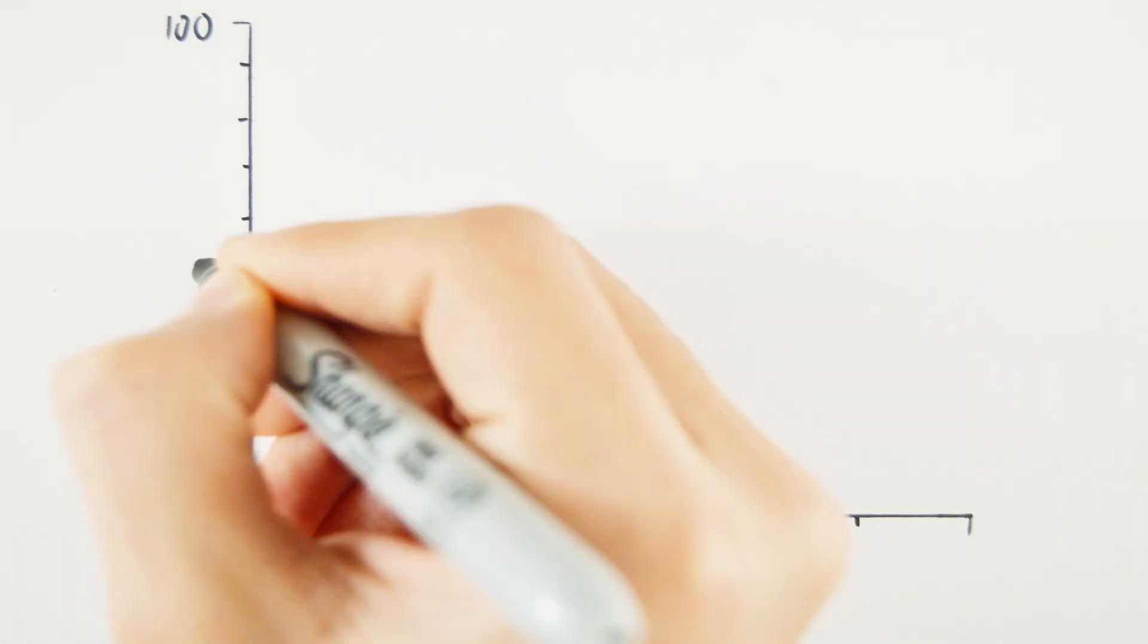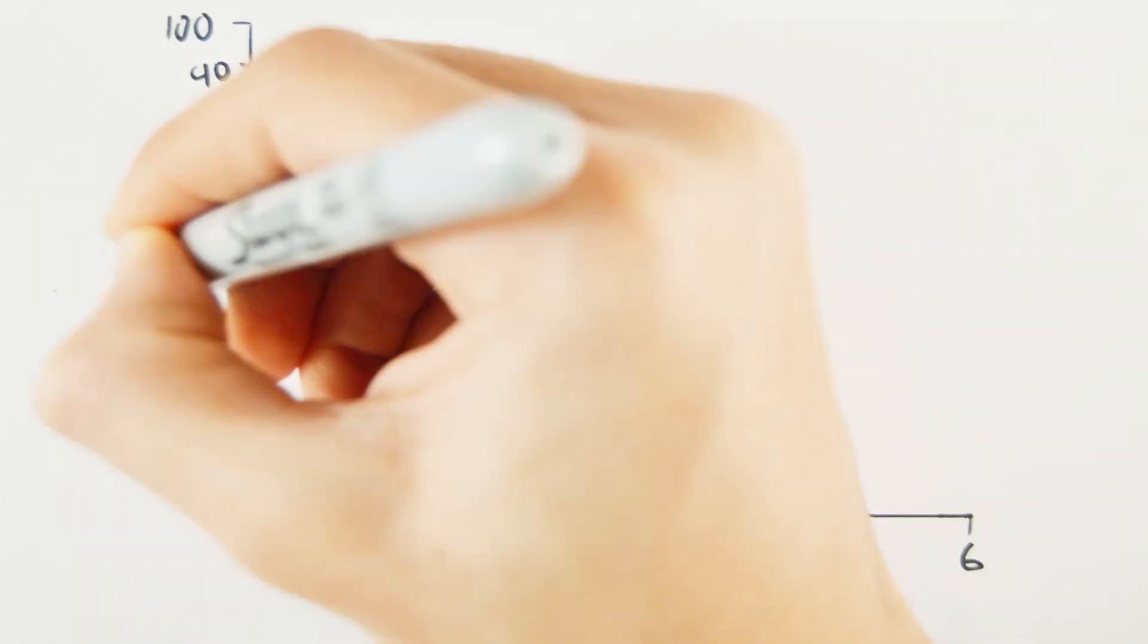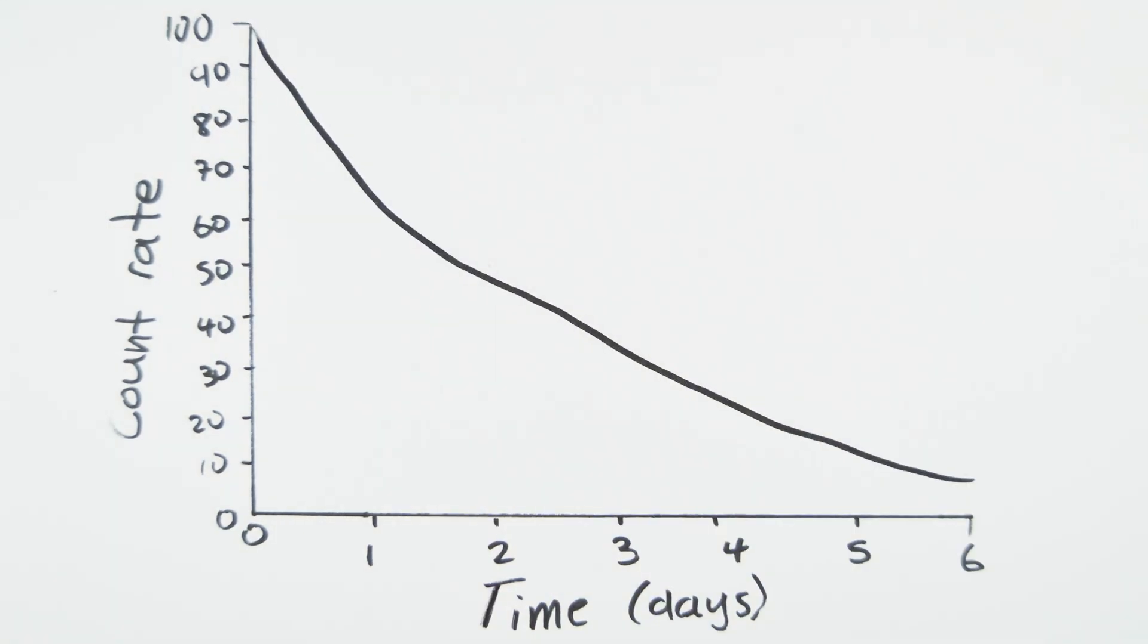We can use graphs to find out the half-life of a radioactive substance. All we have to do is measure the count rate over time and plot the decay curve. As you can see, the count rate drops from 100 to 50 in two days, from 50 to 25 in another two days, to 12.5 and so on.